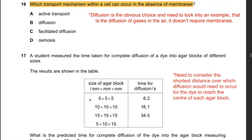Question 16: Which transport mechanism within a cell can occur in the absence of membranes? Out of all the options, the obvious answer is diffusion, because diffusion - such as the diffusion of gases in air - does not require membranes. Hence the answer is B: diffusion.